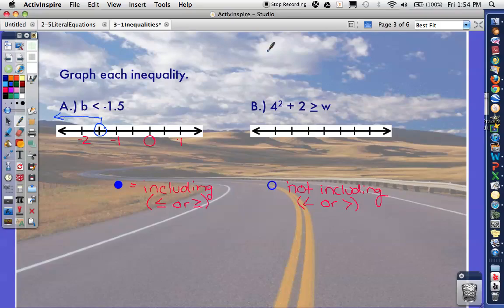For B, you need to simplify this first. So if I have 4² + 2 is greater than or equal to W, simplify what you have first. 4 squared would be 16. And 16 plus 2 would be 18. Remember, you're reading this left to right, so you're saying 18 is greater than or equal to W, but sometimes it's helpful to turn that around and write the variable first. If I want to start with W, I then need to write this backwards. W is less than or equal to 18. Notice I didn't really flip the sign. Here it is open towards the 18, and here it is open towards the 18.